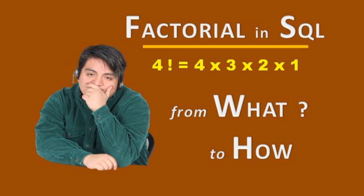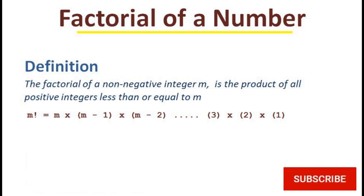Today we are going to consider our next SQL assignment, which is to calculate a factorial of a number. The factorial of a non-negative integer m is the product of all positive integers less than or equal to m. To calculate it, you multiply that number by all numbers till it reaches 1 — you gradually decrease: starting with m, then m minus 1, then m minus 2, and so on.